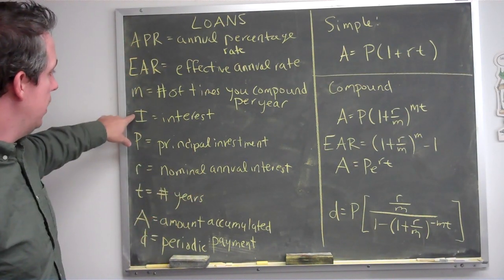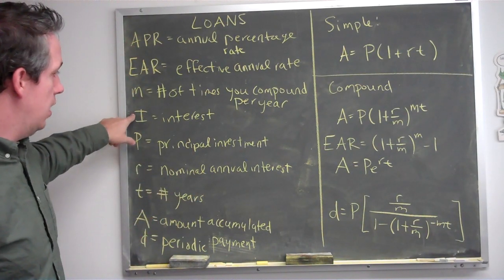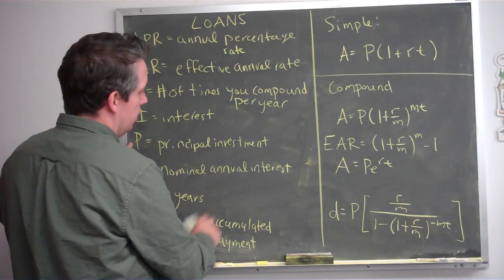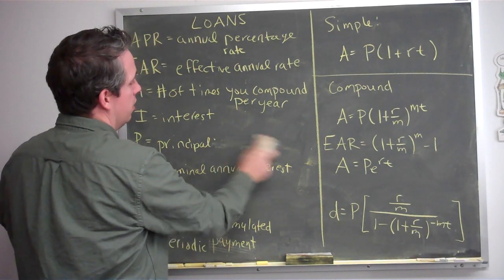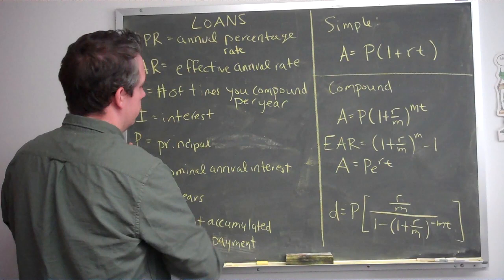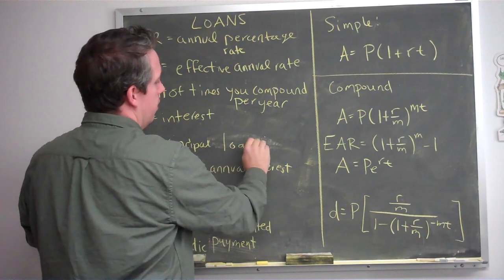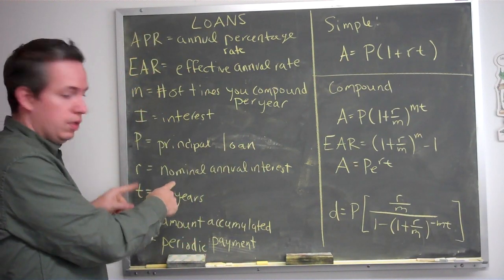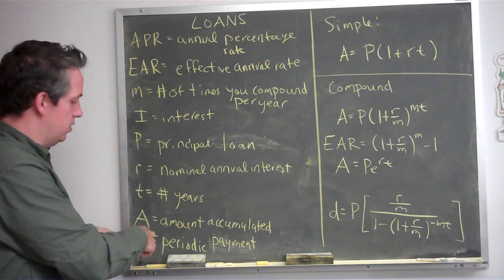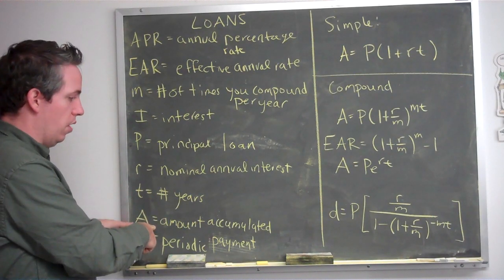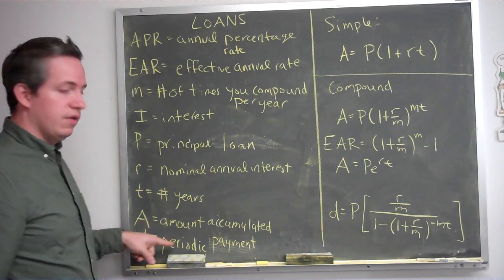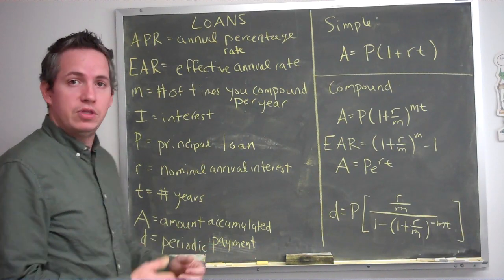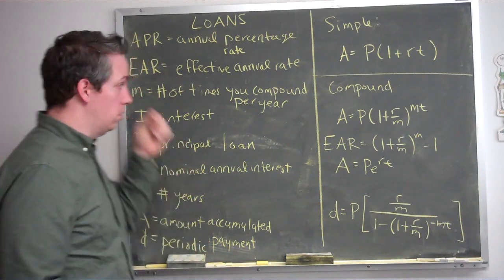What we had last time: I is interest, P is principal — but instead of principal investment, it's now the principal loan, meaning how much money you take out of the bank. The nominal annual interest rate is the same, the number of years is the same, and the amount accumulated is the same. Instead of having periodic deposits, you're going to have periodic payments — you're paying off the loan.